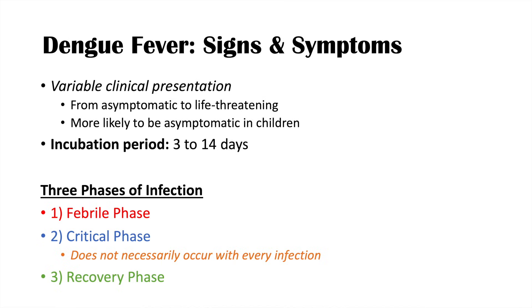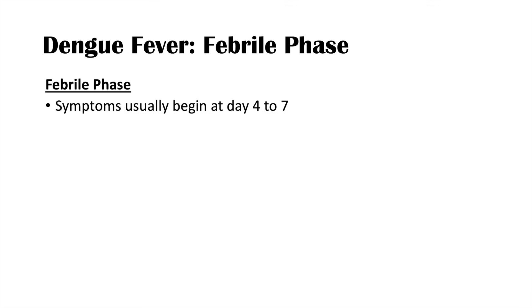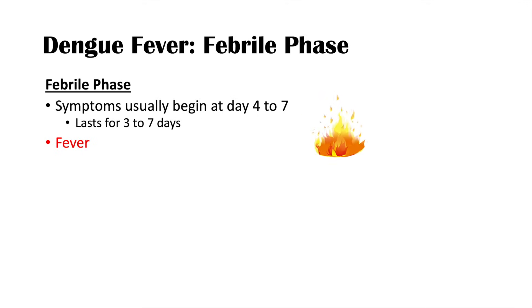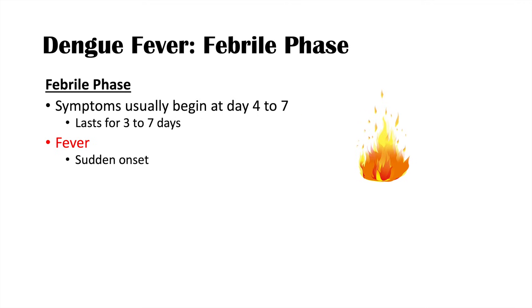The febrile phase is where the infection becomes symptomatic, usually beginning at day four to day seven and lasting three to seven days. As its name suggests, it features a fever — a sudden onset, high-grade fever greater than 38.5 degrees Celsius. Dengue fever is a very important cause of fever in the returned traveler.